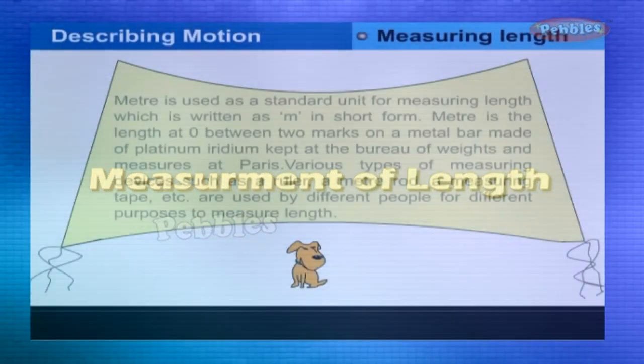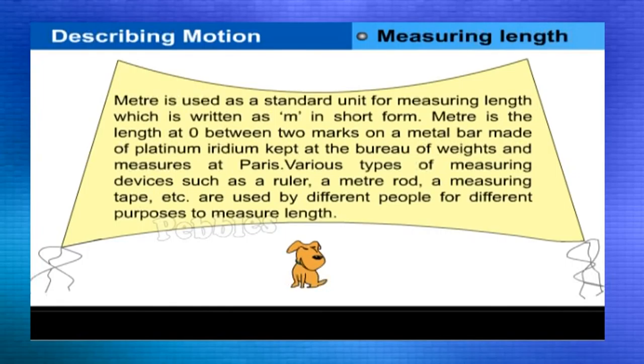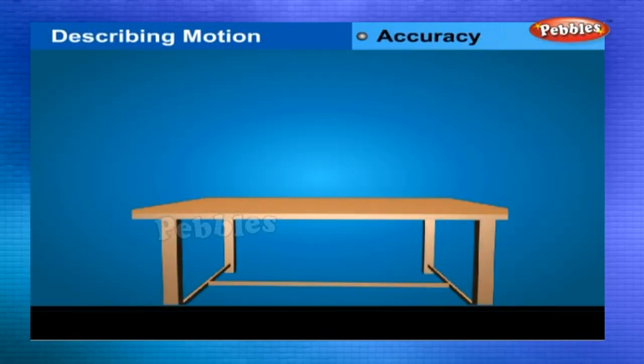Measurement of length. Meter is used as a standard unit for measuring length, which is written as m in short form. Meter is the length at zero between two marks on a metal bar made of platinum iridium kept at the bureau of weights and measures at Paris. Various types of measuring devices such as a ruler, a meter rod, a measuring tape, etc. are used by different people for different purposes to measure length.